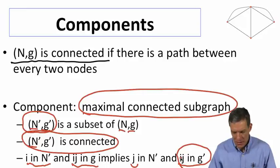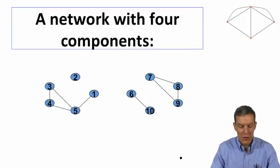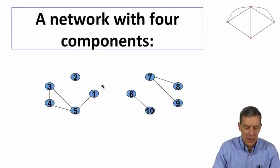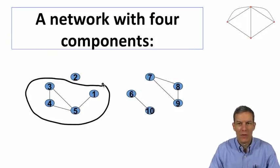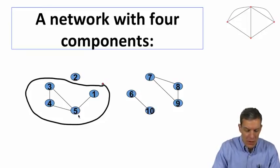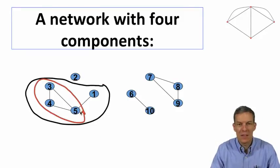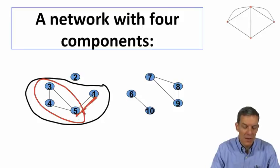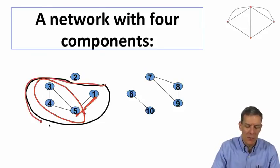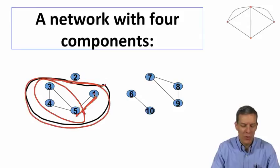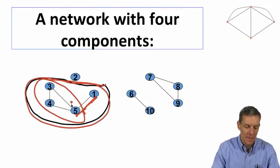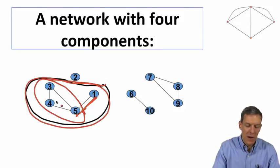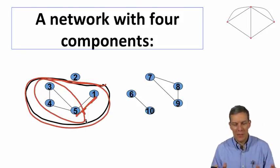In terms of a picture, when we look at components, this part of the network is a component. But this part of the network is not a component. Why is it not a component? It doesn't satisfy that last part of the definition because we've got five in there, five's connected to one and yet we didn't include one in our little picture here. So we have to include that. It's a maximally connected subgraph that would have to include one, four, three and five, and it would have to include all the links there.